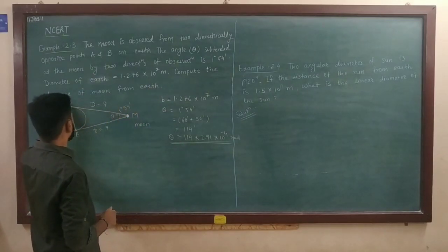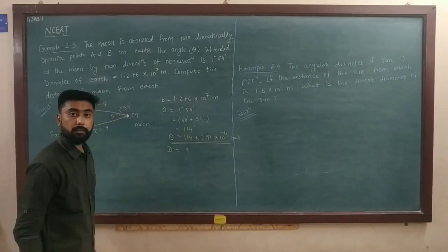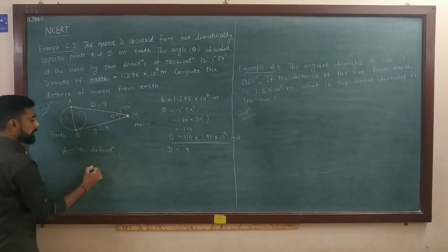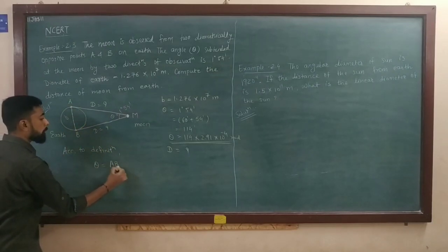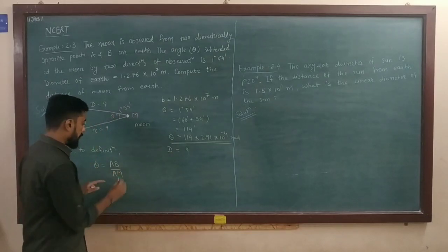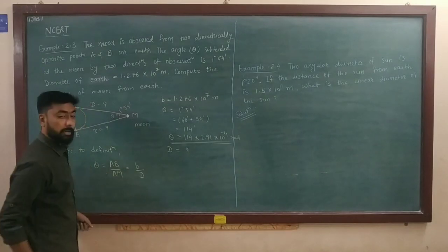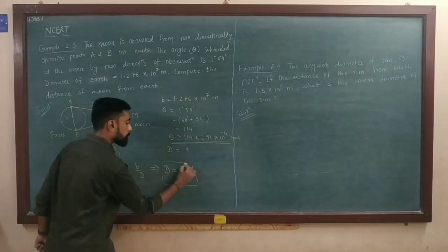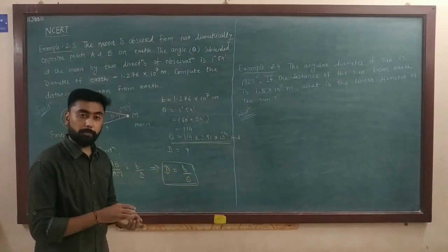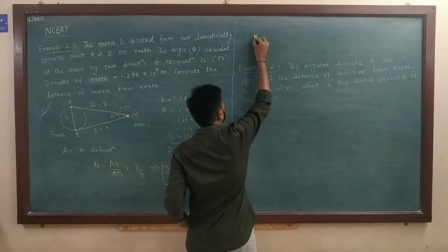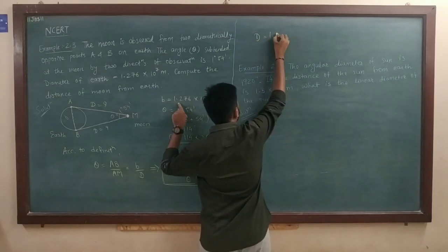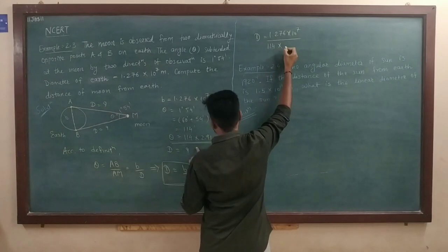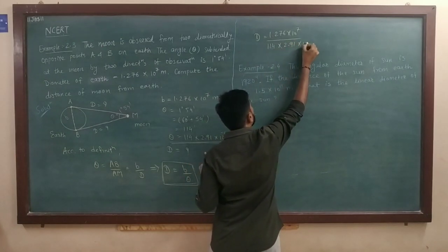According to the definition of plane angle, theta equals arc length upon radius, which here is b upon D. So D equals b by theta. Capital D equals 1.276 into 10 to the 7 upon 114 into 2.91 into 10 to the minus 4.